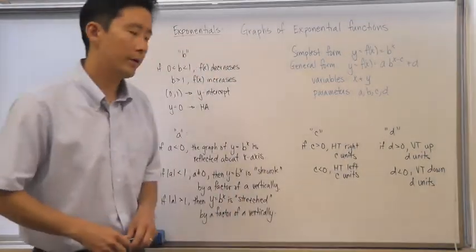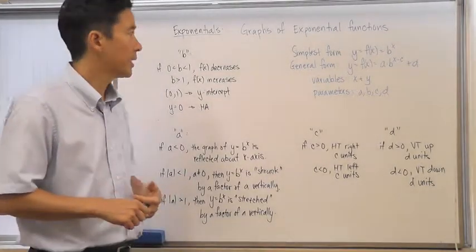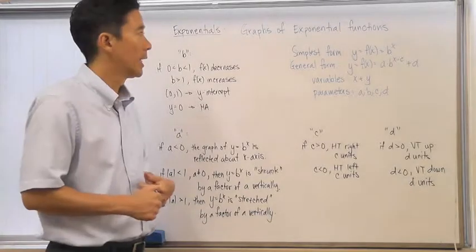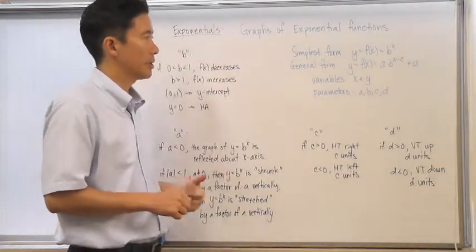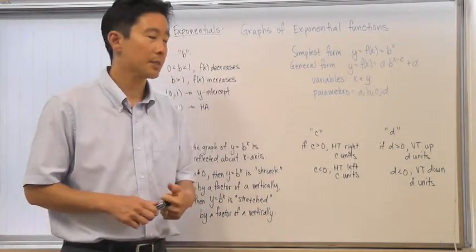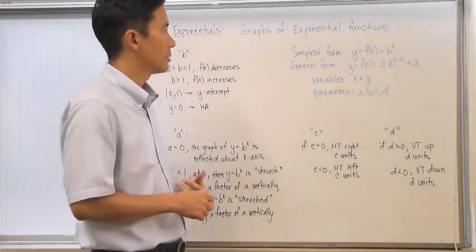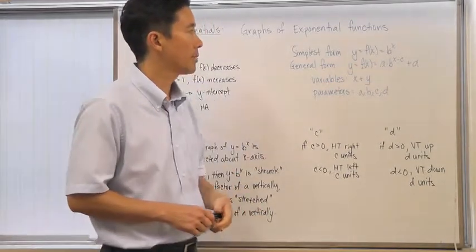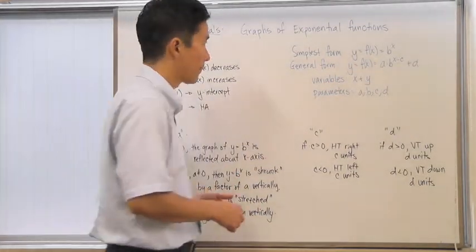Now that we know how to work with exponentials, let's go ahead and take a look at the graphs of these functions. There's the simplest form, which is y equals f of x equals b to the x, and its general form, which is f of x equals a times b to the x minus c plus d.